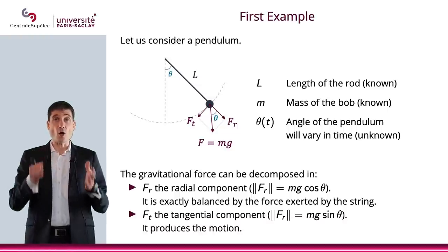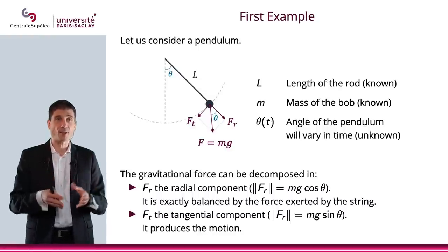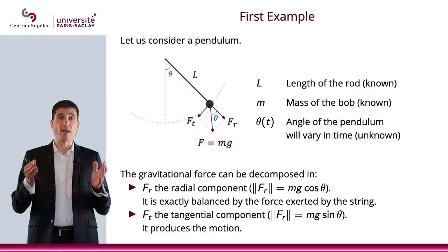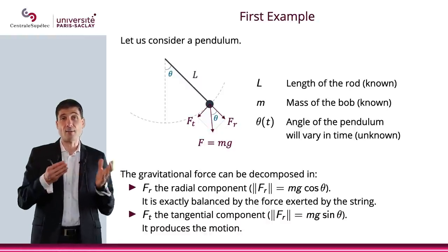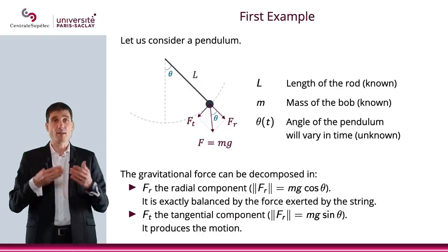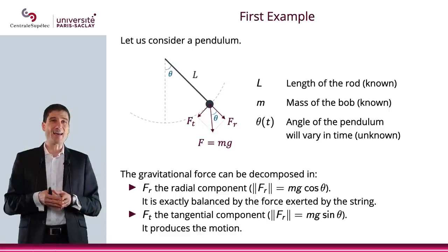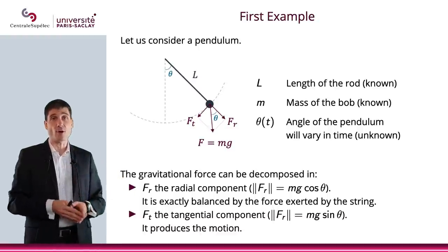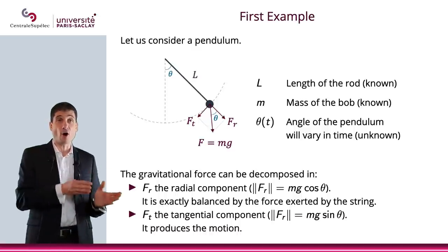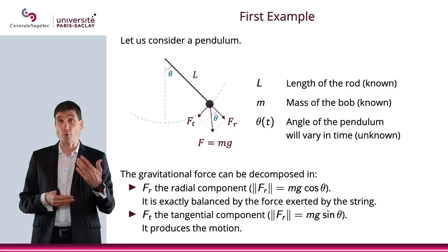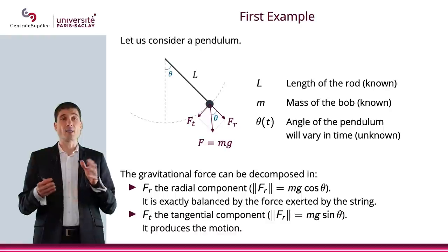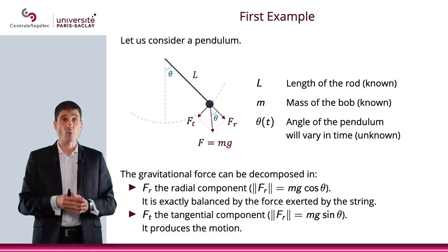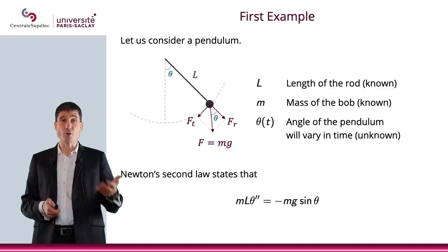Now, the earth will attract that bob. So there is a gravitational force that can be decomposed in two parts. The first part is the radial component, which will have a norm, which will be F times cosine θ. F is mg. It's the mass of the bob times g of the gravitation. And Ft is the tangential component. So that will be FR, the norm will be FR. And that will be mg sin θ. Now, FR will be exactly balanced by the force exerted by the string or by this rod. And so therefore, there will be nothing really of interest on that particular radial component. What will be of interest will be what happens in the tangential component, because this is what will produce the motion.